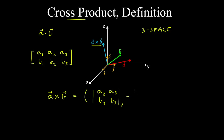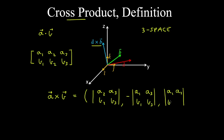To get the second component, we take the negative of the determinant of the matrix that results when we remove column 2, giving entries a1, a3, b1, b3. Similarly, to get the third component, we remove column 3 and take the determinant of the matrix with entries a1, a2 and b1, b2.